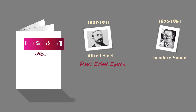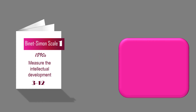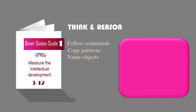Together, Binet and Simon developed and co-authored a test to roughly measure the intellectual development of young children between the ages of 3 to 12. They wanted to find a way to measure the ability of children to think and reason. Binet developed a test that asked children to follow commands, copy patterns, name objects, and put things in order or arrange them properly.